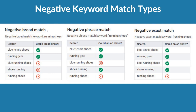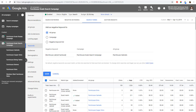If you're adding a single-word negative keyword, negative broad match and negative phrase match will perform exactly the same. So for a single word, just use negative broad match — you don't need negative phrase match. I generally use negative broad match for single keywords, and if the negative keyword is more than one word, I'll use phrase match or exact match, since it's easier for me to manage.